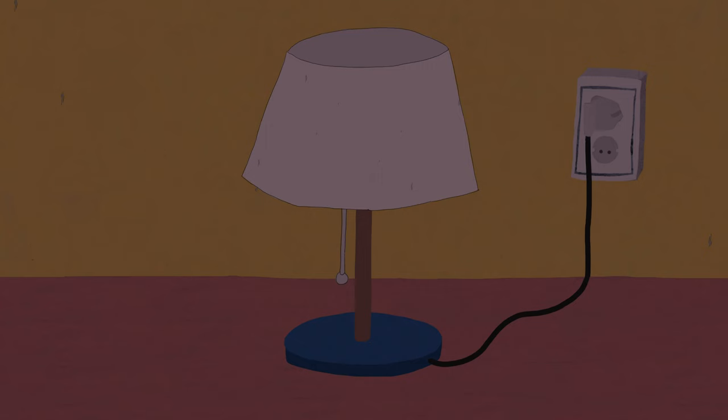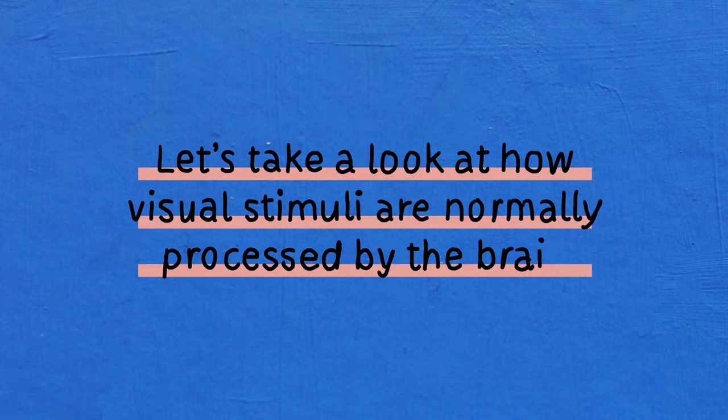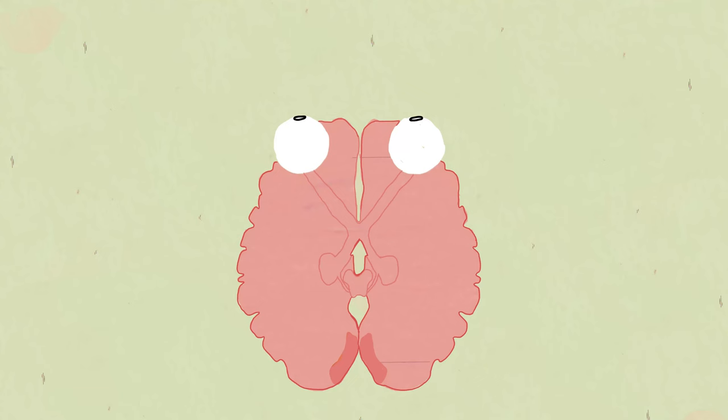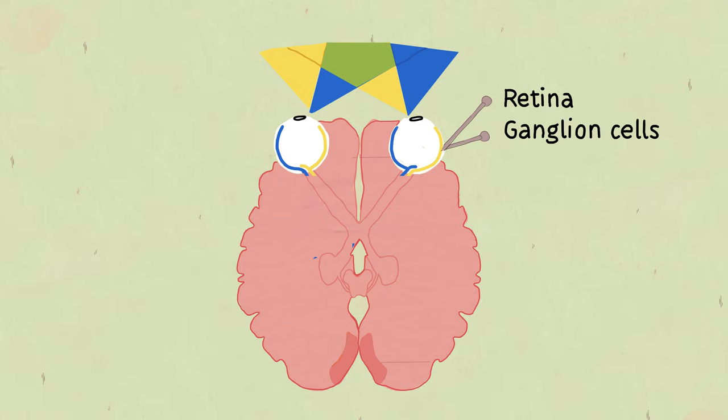Let's take a look at how visual stimuli are normally processed by the brain. Bear with me for a second. Visual processing starts in the eyes as light falls onto the retina. The signal then proceeds to the ganglion cells. The axons of these ganglion cells form the optic nerve together.